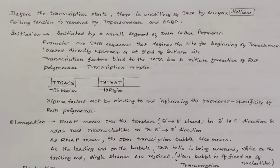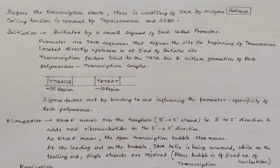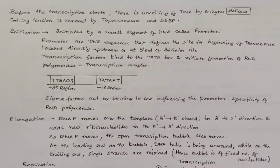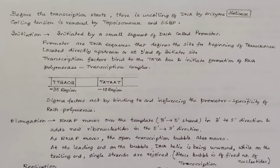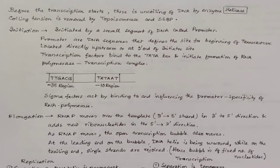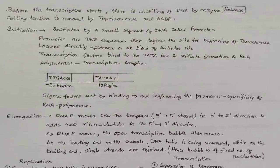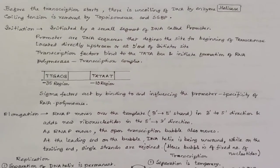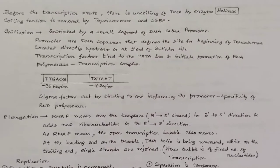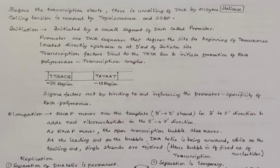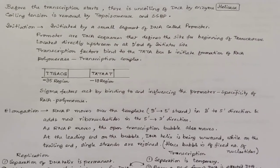Before transcription starts, there is uncoiling of DNA by enzyme helicase, and coiling tension is removed by two enzymes: topoisomerase and SSBP (single strand binding protein). We come to the first process called initiation, which is initiated by a small segment of DNA known as the promoter.